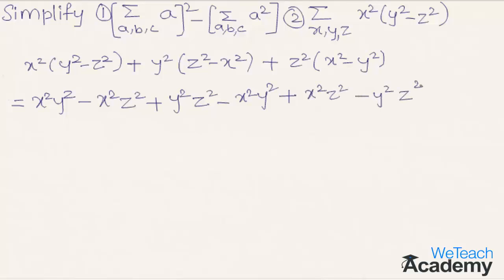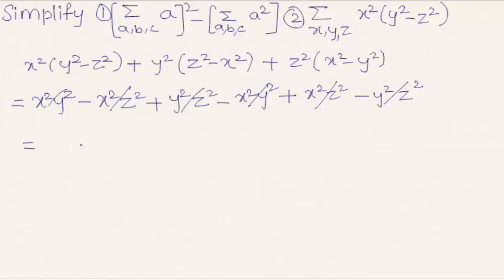Here x²y² and minus x²y² cancel. Minus x²z² and plus x²z² cancel. Plus y²z² and minus y²z² cancel. So we get the result as zero.